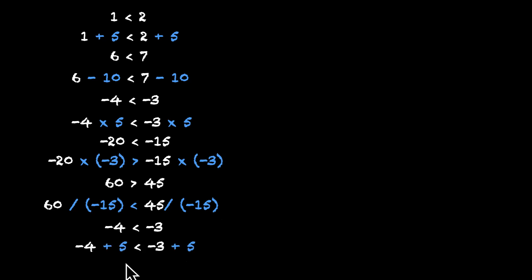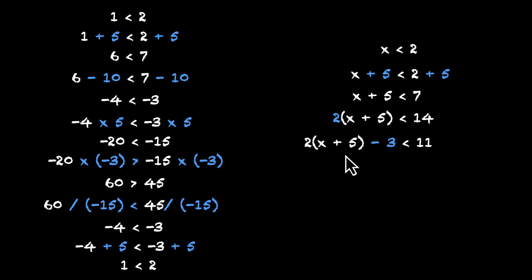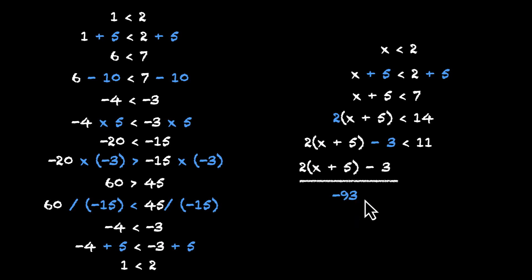This works neatly for literal identities too. If we have x is less than two, we can always add or subtract a fixed number — adding five to both sides gives x plus five is less than seven. We can also multiply: multiplying by two, a positive number, does nothing to the sign — two times x plus five is less than fourteen. Now let's subtract: two times x plus five minus three gives eleven; the inequality still stays the same, the sign is still less than. But when we divide by a negative number, like minus ninety-three, the sign flips — this was less, now it becomes greater. So whenever you're multiplying or dividing by a negative number, you flip the sign. Otherwise, for every other scenario, we don't need to worry.